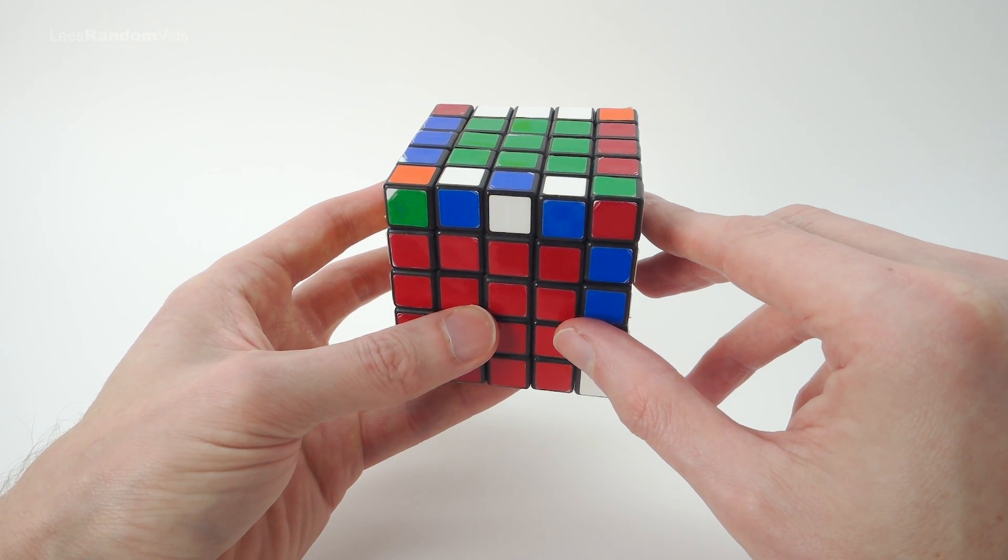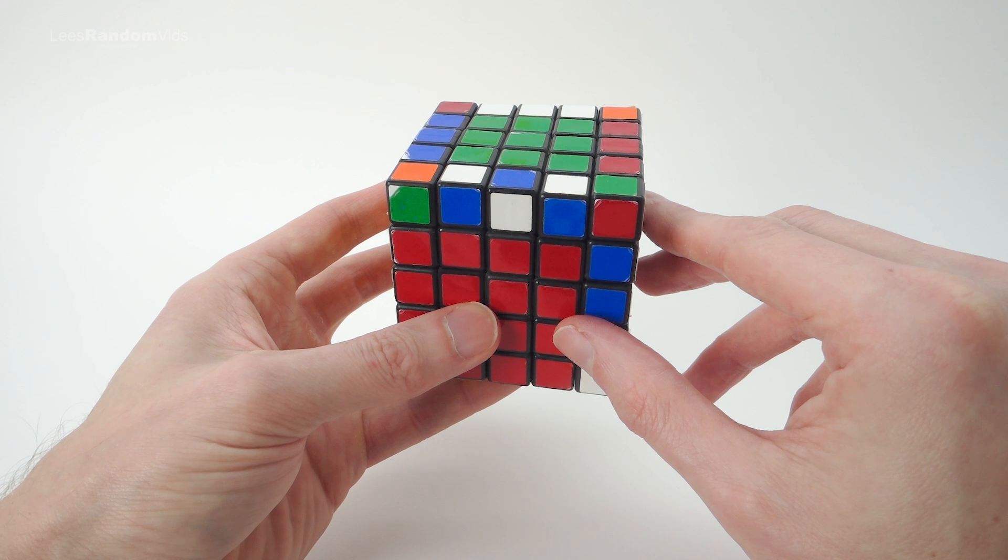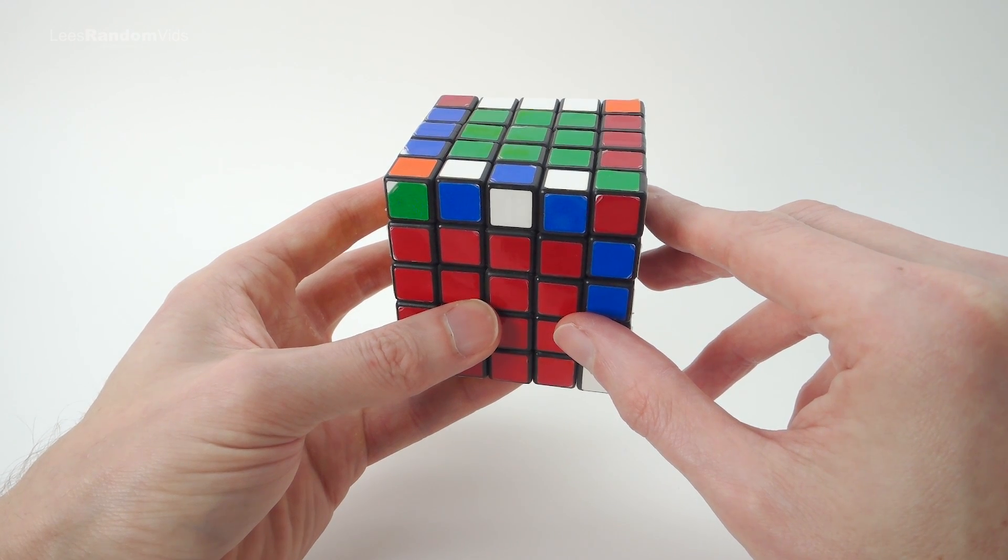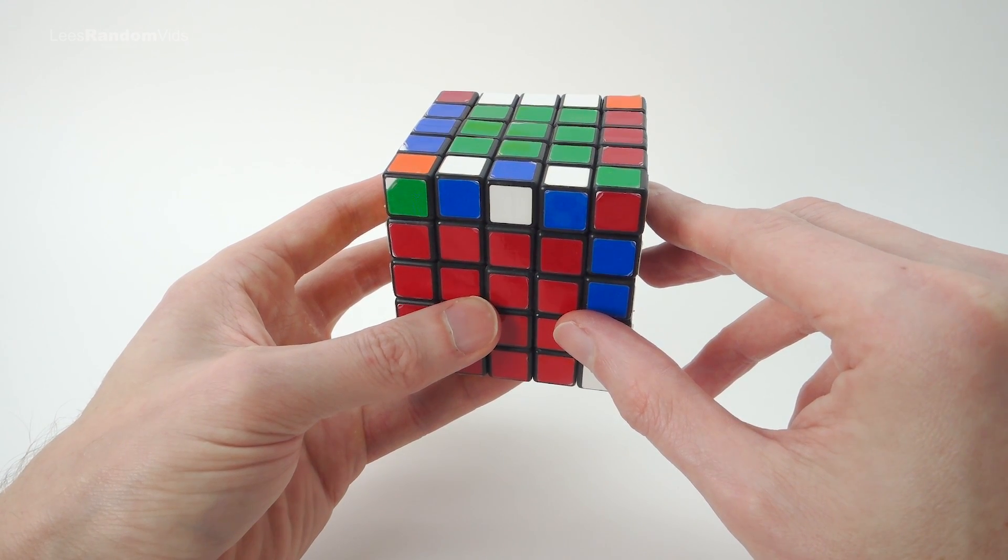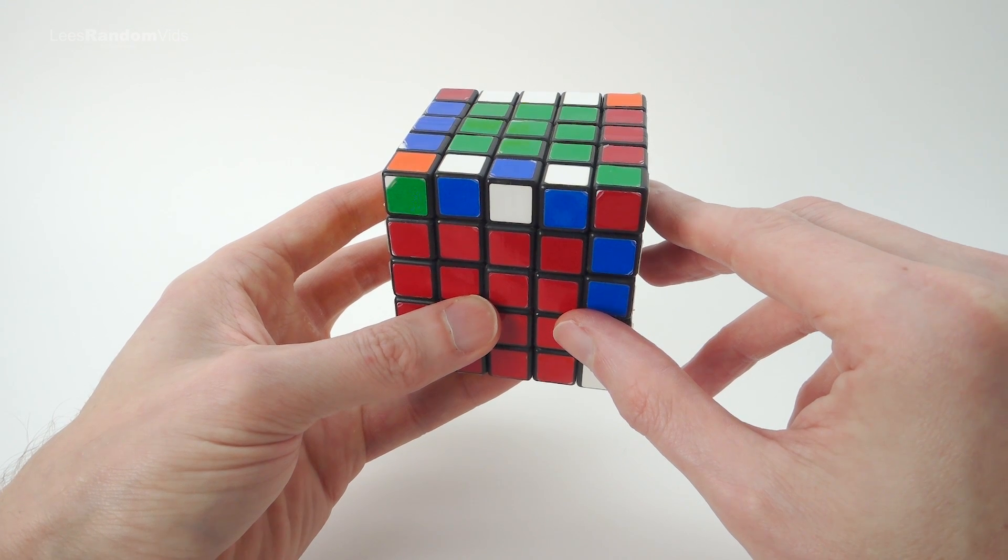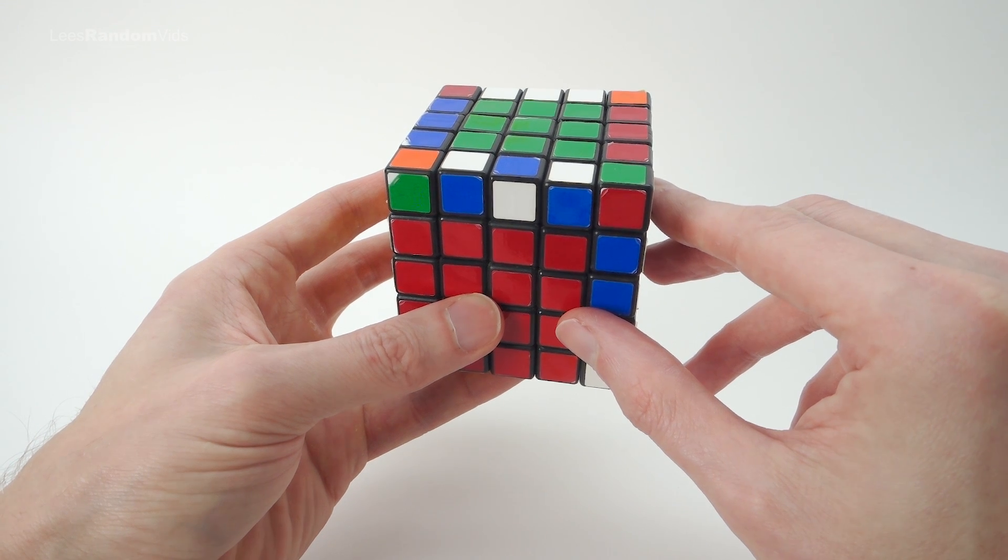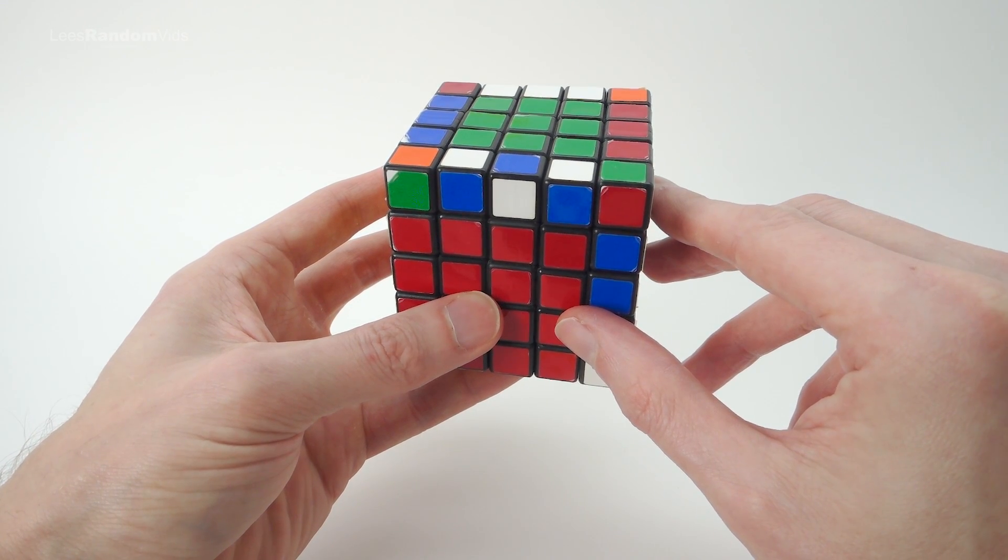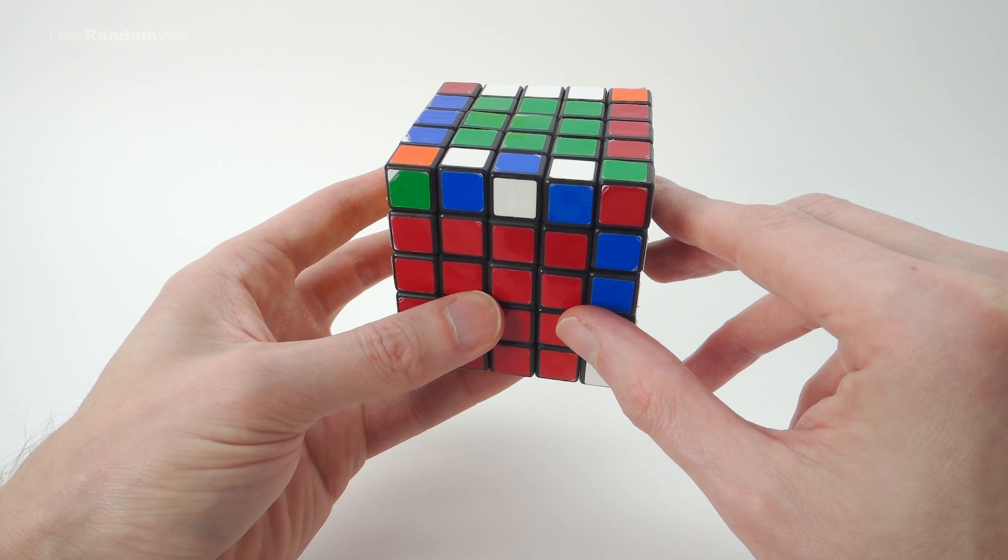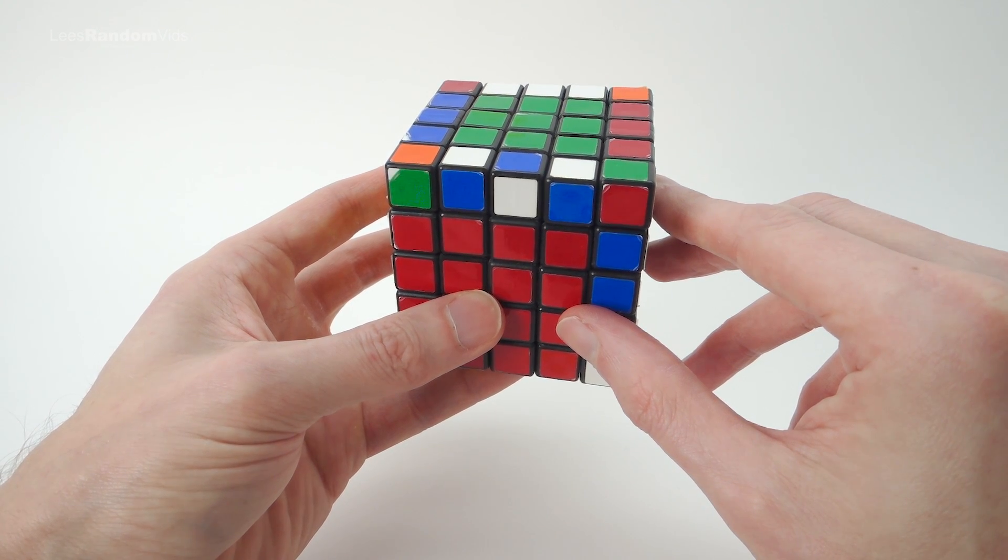However, if you watch my tutorial on how to solve the edge pieces, I teach you a way where you will never actually run into this parity error anyway. So you can avoid running into this parity error. And if you want to learn how to do that, then watch my tutorial on how to solve the edge pieces on a 5x5 Rubik's Cube. But if you have run into this parity error somehow or you just want to learn how to get out of the parity error, I'm going to show you now.